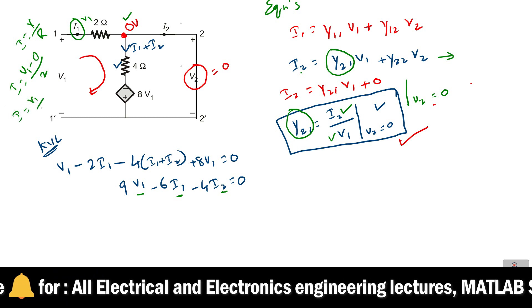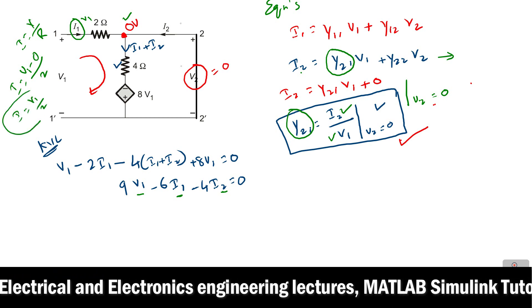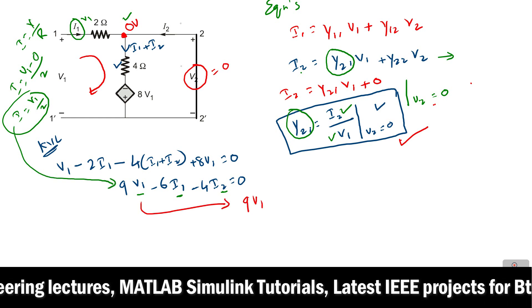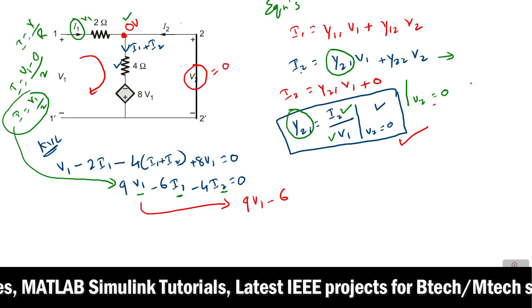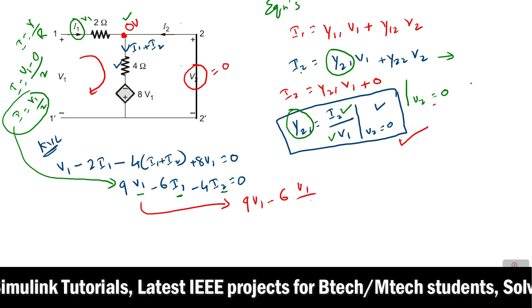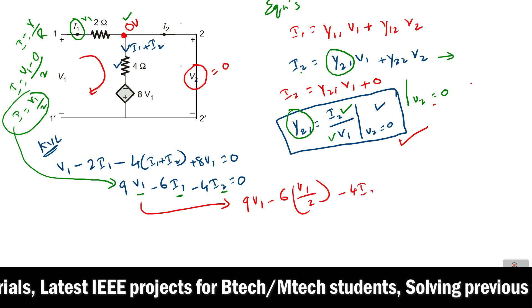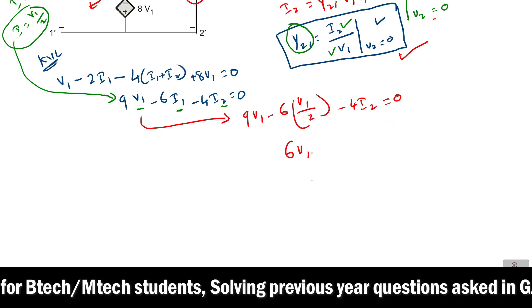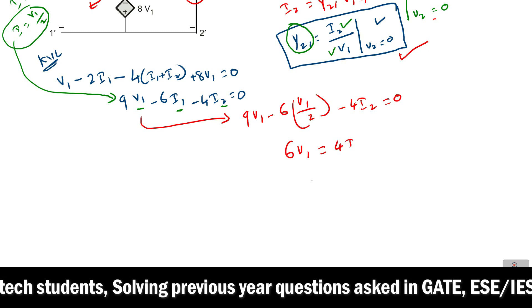Just substitute this value in the below equation. Then you will get 9v1 minus 6, and we know that i1 is v1 by 2, minus 4i2 equals 0. By simplifying this you will get 6v1 equals 4i2, so finally you will get i2 by v1 equals 6 by 4, that is 1.5 siemens.